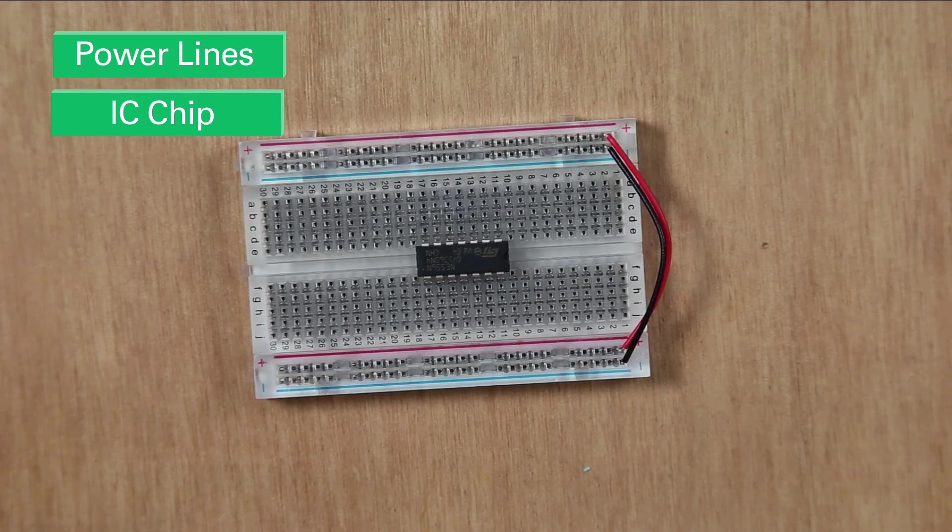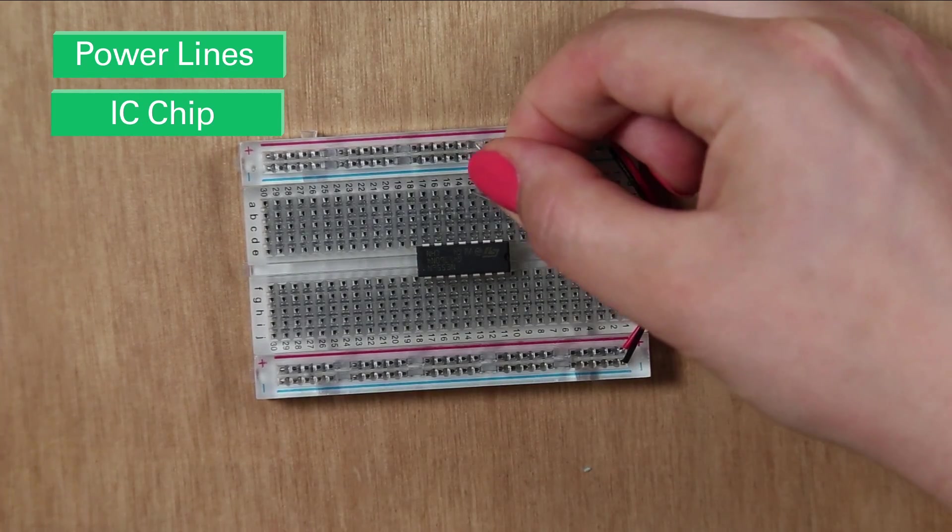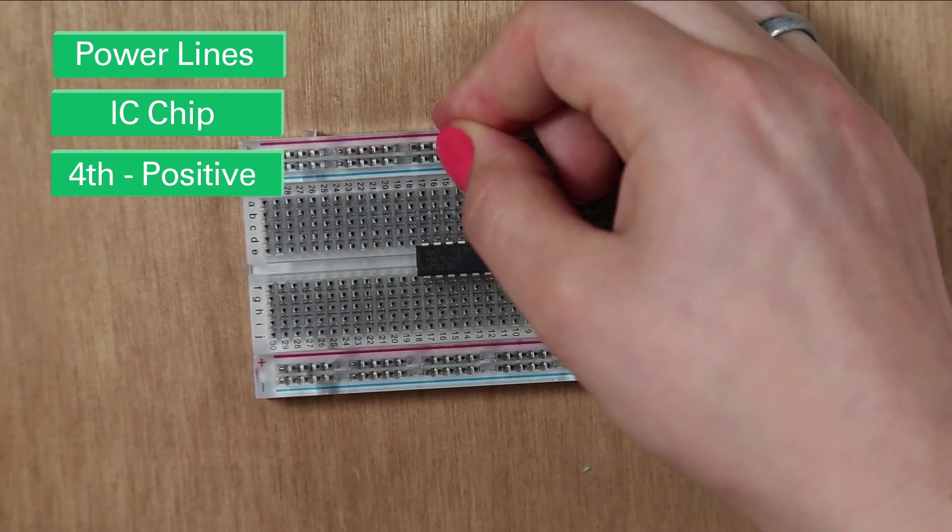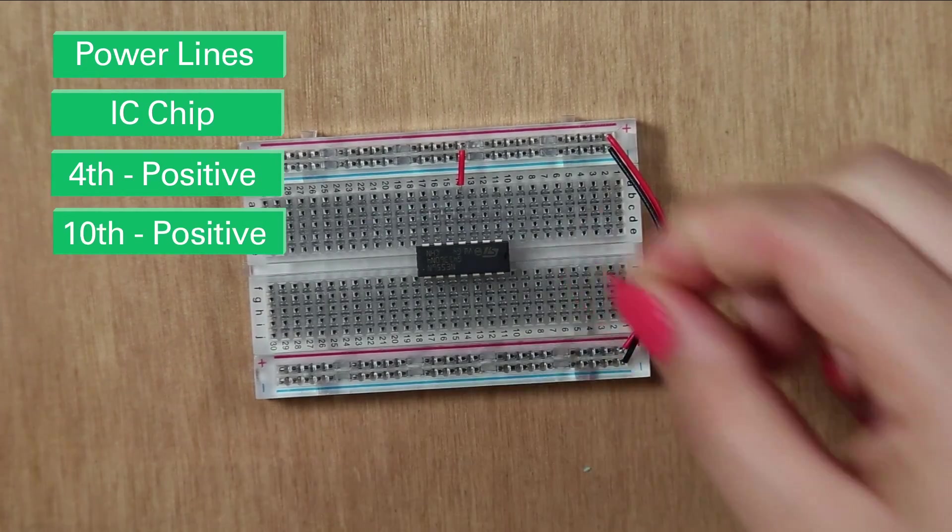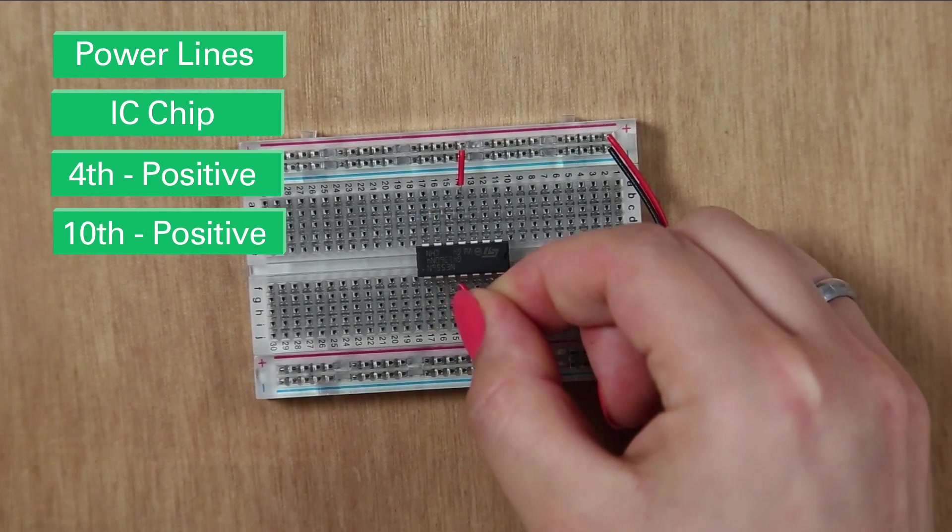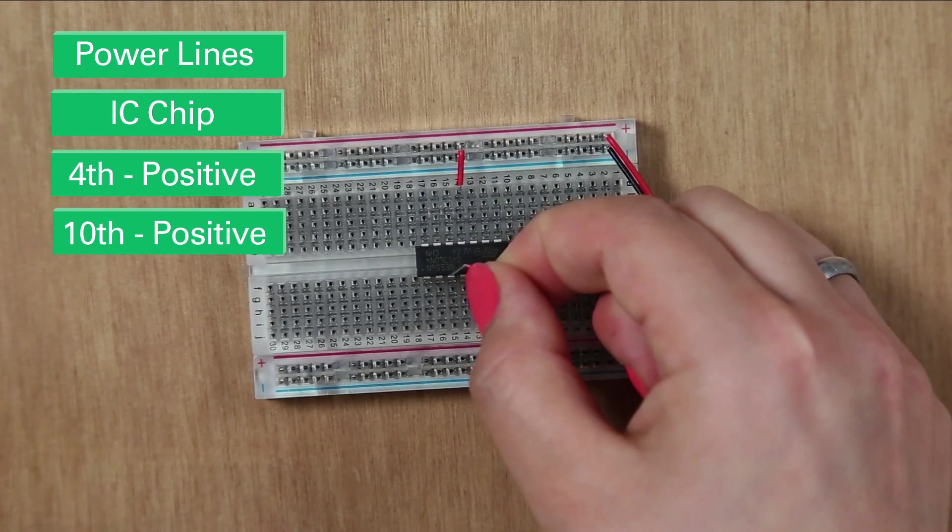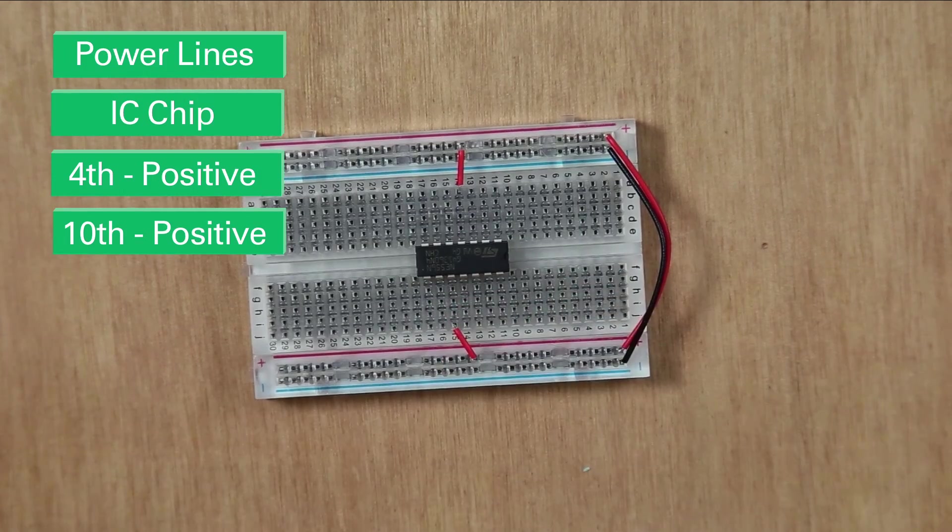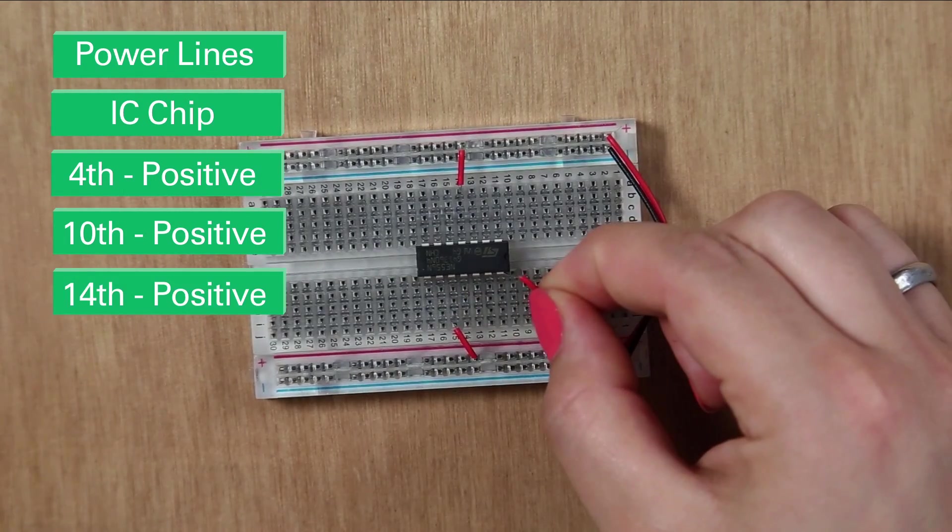So we're going to connect pin 4 to the positive rail. So 1, 2, 3, 4 to positive. Pin 10, 7, 8, 9, 10. So you can use any of these little pins here because they're all connected. So that's pin 10, positive. And then also pin 14. So that's the last one here.